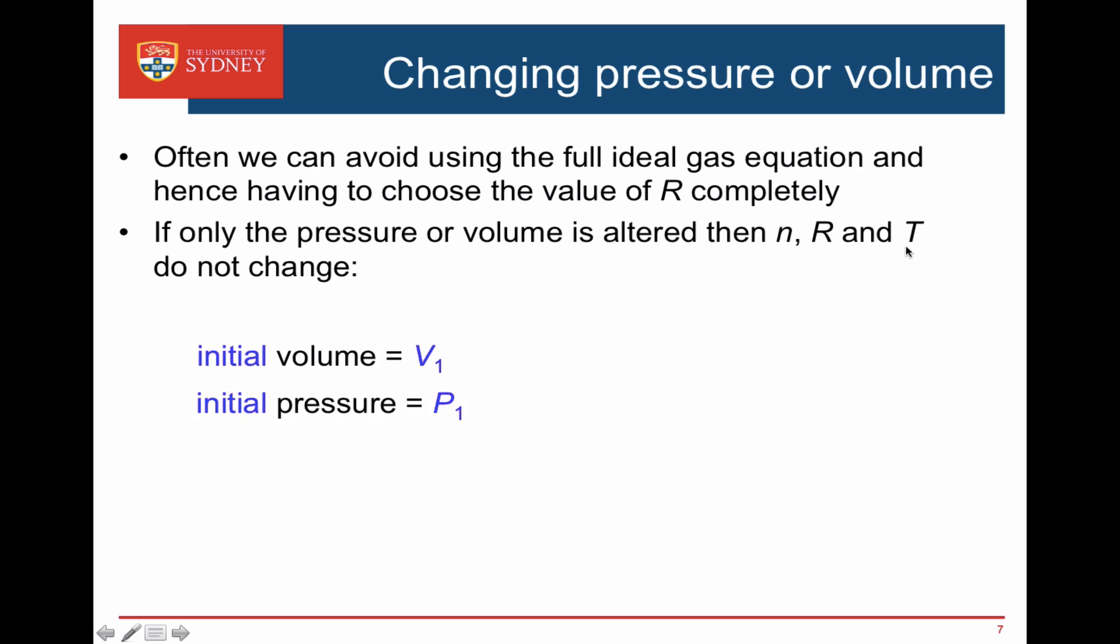So we start out with an initial volume of our gas V1 and an initial pressure of our gas P1. Then from the ideal gas equation P1 times V1 equals nRT and we end up at a different volume and a different pressure. So the final volume is V2 and the final pressure is P2. So equally P2 times V2 equals nRT. It's the same gas though. It's the same number of moles, the same temperature. So nRT is the same. So that must be that P1 times V1 is the same as P2 times V2. And there's no value of R there and there's no value of n there and there's no value of T there because they're all constant.